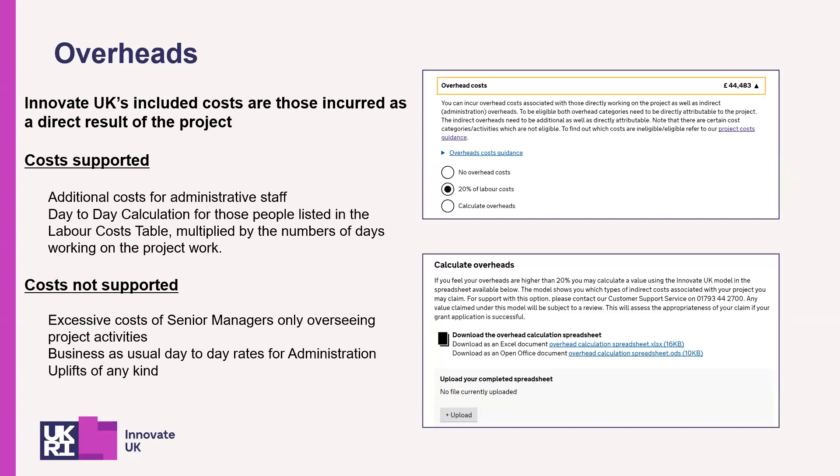Direct overheads are costs associated with staff working directly on the project. We supply a simple form into which you can list out each type of direct overhead, together with the methodology or basis of apportionment to this particular project. Again, these overheads would not be incurred if the project does not happen.